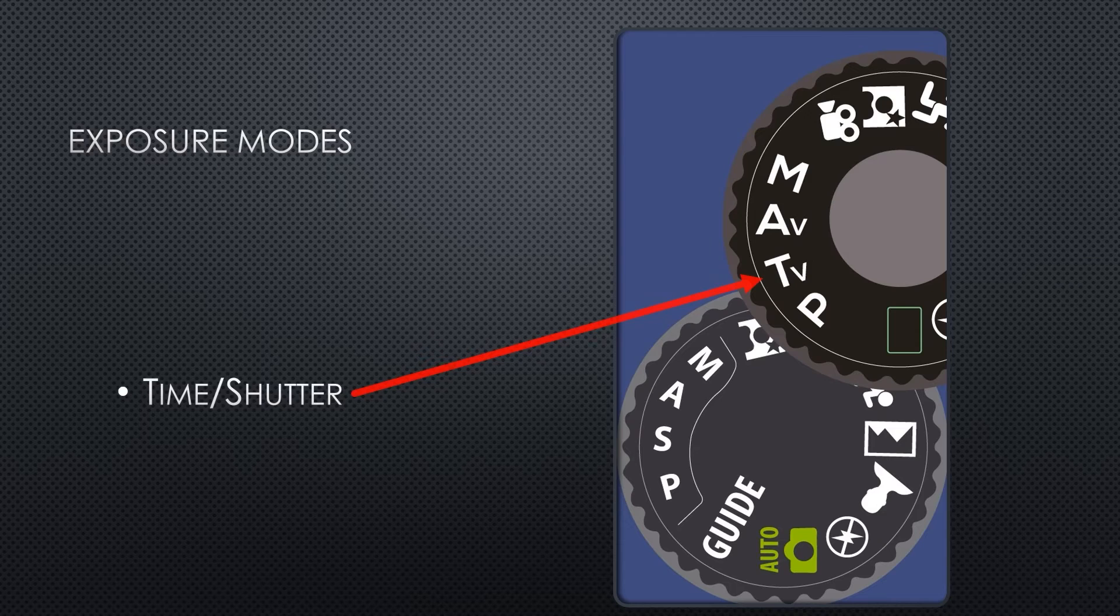The S or TV mode stands for shutter or time value mode. In this mode, you're prioritizing a shutter speed to achieve a particular look and letting the camera set the aperture that will zero out the light meter. This is common for sports and action photographers who need a really fast shutter speed regardless of the depth of field. Likewise, in long exposure photography, you want to leave the shutter open for a longer time, but the aperture may not be as important to you. This might be a scene of the lake, for example, where you want a long exposure to blur the wave action.